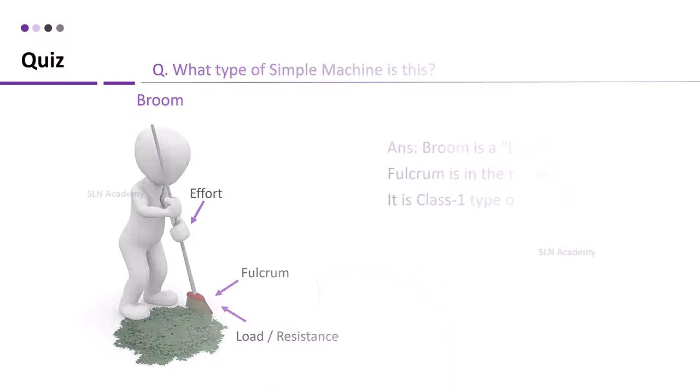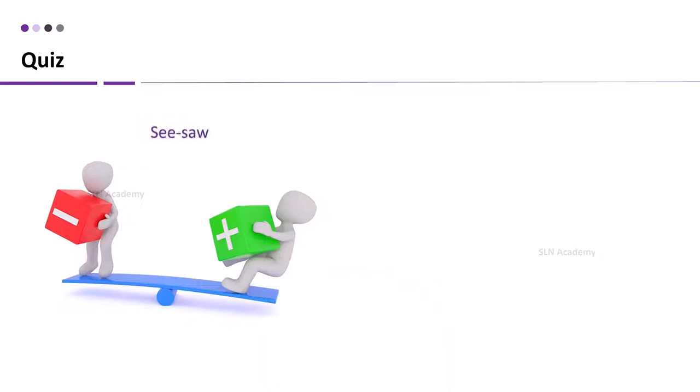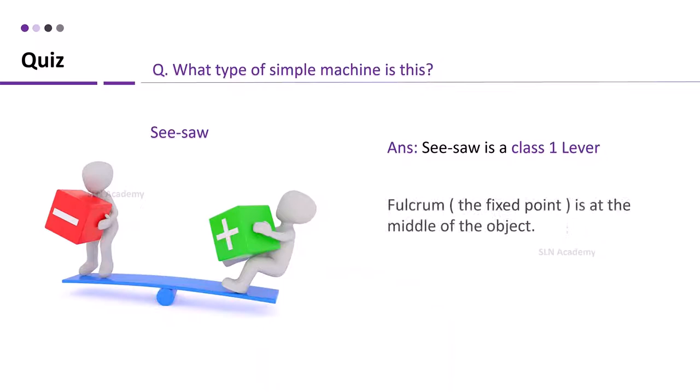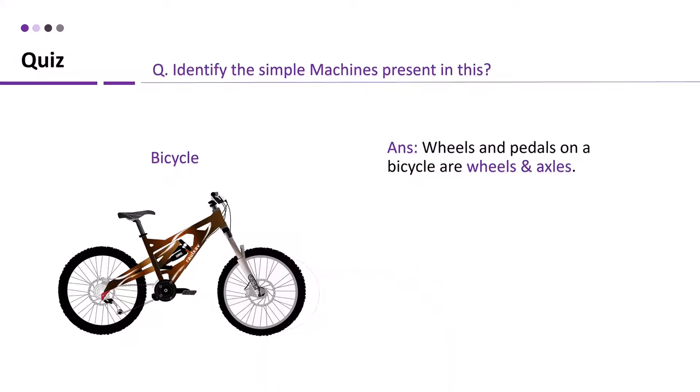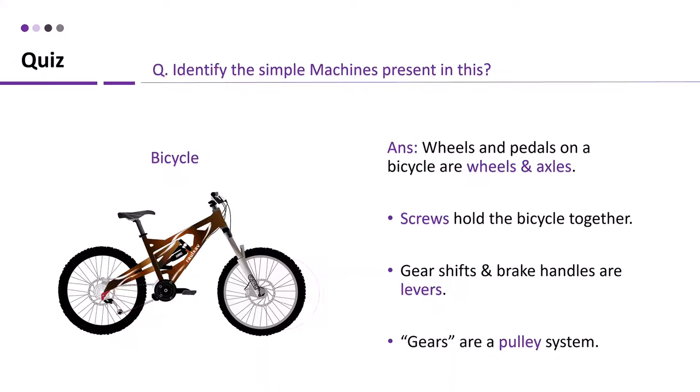Seesaw, and the answer is seesaw is a class 1 lever. Bicycling, identify the simple machines present in this. And the answer is wheels and pedals on a bicycle are wheels and axles. Screws hold the bicycle together. Gear shifts and brake handles are levers. Gears are a pulley system.